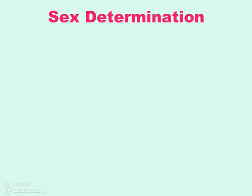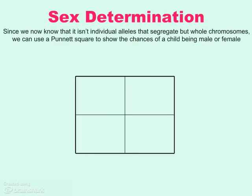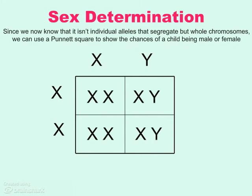We just discussed how Mendel wasn't quite right with the Law of Independent Assortment. We know now that it's not individual alleles that are doing the segregating — instead, it's whole chromosomes, homologous pairs that actually segregate into the respective gametes formed. When we do a Punnett square, we can think of it as whole chromosomes segregating, and we can draw a Punnett square for sex chromosomes. The male will either make sperm with the X chromosome or the Y chromosome, while females will have eggs with X chromosomes only. When we do the math, it's about half and half male-female, and that's about the gender skew in global populations.